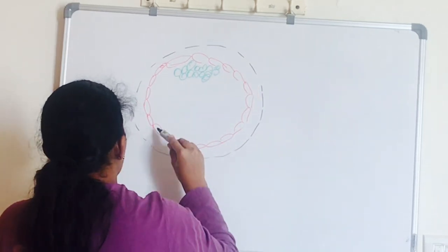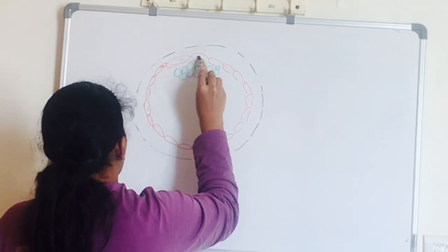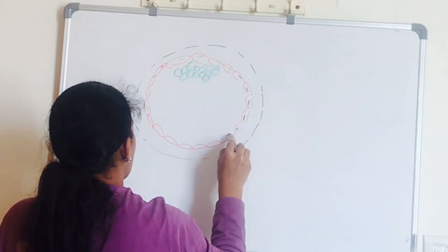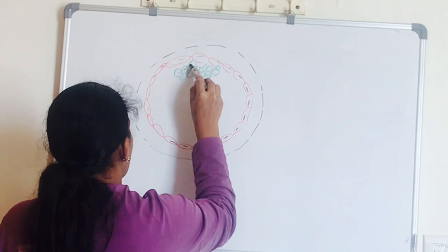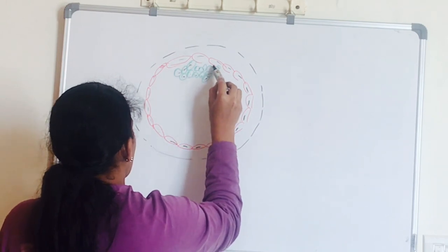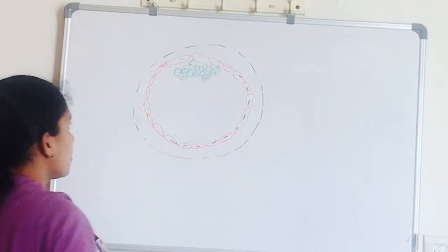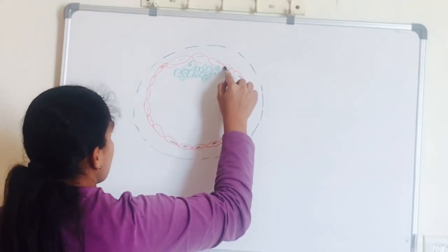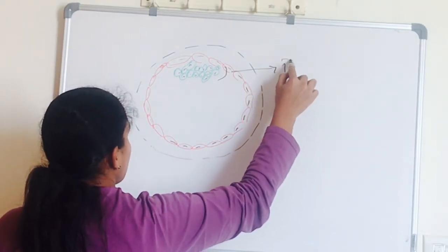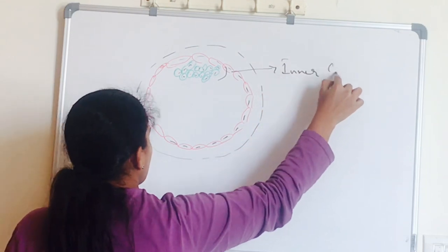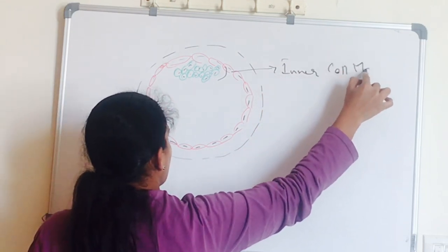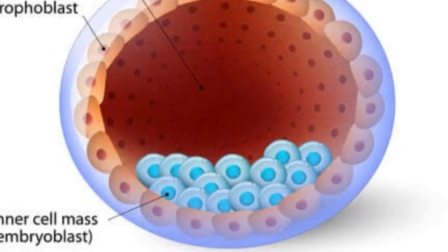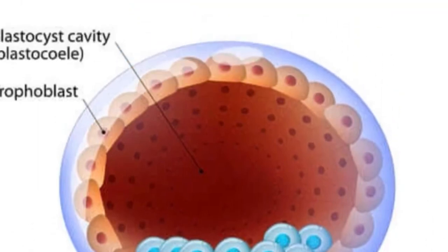So this inner cell mass comes to attach to one side of the trophoblast and that pole is called embryonic pole, and the opposite side pole is non-embryonic pole. So this is blastocyst with two poles.